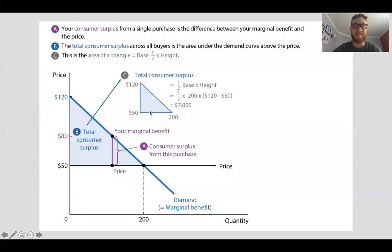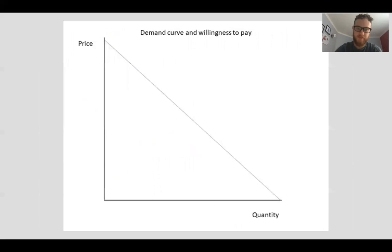The total consumer surplus across all buyers is the area under the demand curve and above the price. Right here we're looking at B, the big area right here. This is the area of a triangle, base times the height divided by 2. Over here you can see they do the calculations. They find that the total consumer surplus for this little example is $7,000.